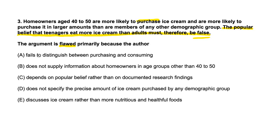So let's look at the answers. A says: fails to distinguish between purchasing and consuming. There we go — it is confusing purchasing and consuming. B says: does not supply information about homeowners in age groups other than 40 to 50. That doesn't really make the argument flawed. C says: depends on popular belief rather than documented research findings — they never mention whether the information was from research or popular belief, so C is wrong. D says: does not specify the precise amount of ice cream purchased by any demographic group — the conclusion is about eating, not buying, so D is irrelevant. E discusses ice cream rather than more nutritious foods — completely irrelevant. So the answer is A.